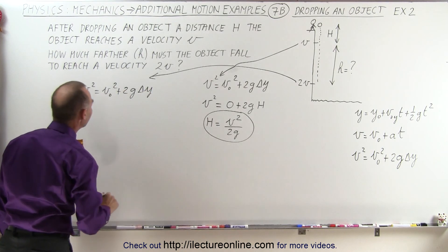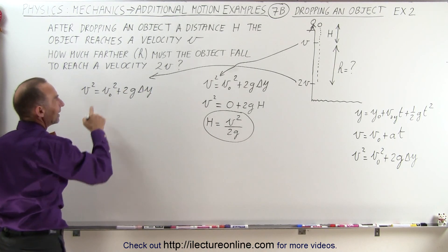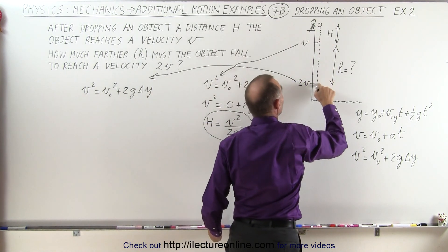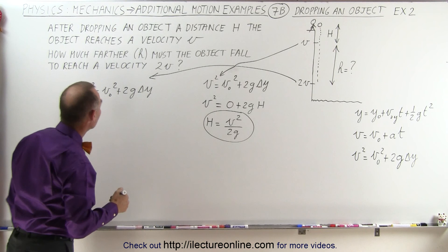and again we'll keep everything positive. And the initial velocity, again if we start from the very beginning and we make it all the way to this point, then we call that initial velocity zero.